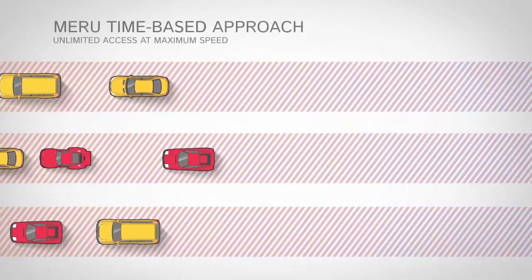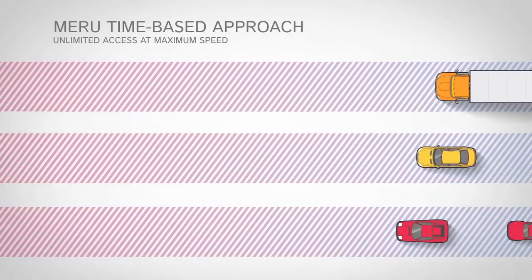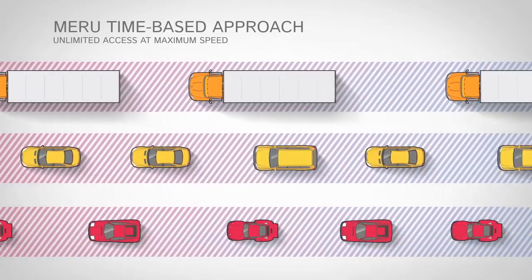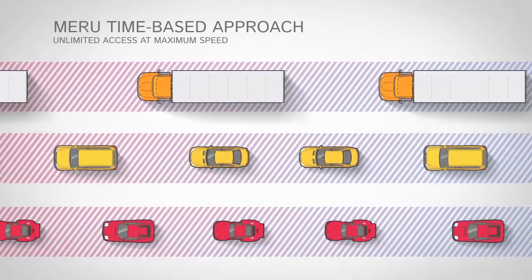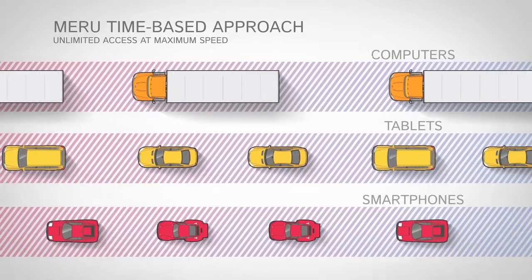Maru's time-based approach ensures true airtime fairness. On this new highway, all vehicles travel at their maximum speeds, even those carrying the most cargo, because each type of vehicle has its own lane.